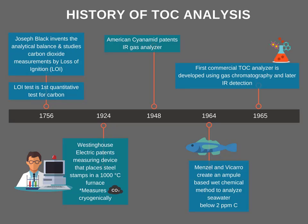The evolution of oxidation techniques can be understood by studying the history of TOC. Joseph Black, in 1756, invented the analytical balance and studied carbon dioxide measurements by loss of ignition — the first quantitative test for carbon. In 1924, Westinghouse Electric patented a measuring device placing steel stamps in a 1000°C furnace measuring CO₂ cryogenically. In 1948, American Cyanamide patented the first IR gas analyzer. In 1964, Mencel and Ficarro created an ampule-based wet chemical method to analyze seawater below 2 ppm carbon.